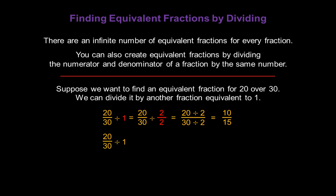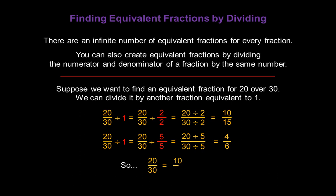Let's find another fraction that's equivalent to twenty over thirty. We're going to divide by a fraction equal to one — this time, five over five. We'll have twenty divided by five for the numerator, and thirty divided by five for the denominator. Twenty divided by five gives us four, and thirty divided by five gives us six. So we know that twenty over thirty is equivalent to ten over fifteen, which is equivalent to four over six. All three fractions are equivalent to each other.